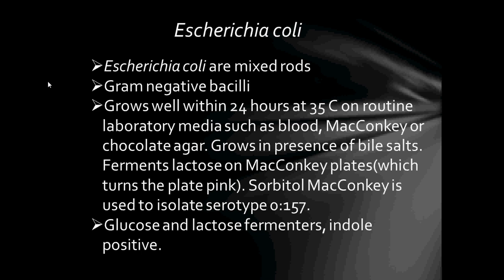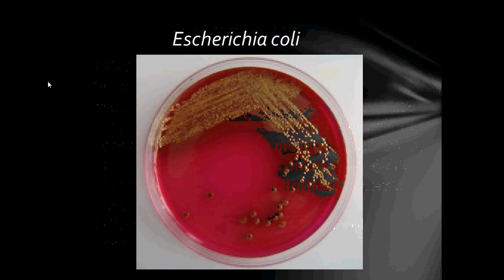Sorbitol MacConkey on the other hand is used to isolate the serotype O157. E. coli O157 differs from other strains of E. coli in being unable to ferment sorbitol. The O refers to the cell wall antigen number — it stands for 'Ohne Hauch,' which is German for 'without film.' They are glucose and lactose fermenters and they are indole positive. An indole test is a biochemical test performed on bacterial species to determine the ability of the organism to convert tryptophan into indole. This is Escherichia coli growing on MacConkey plate.